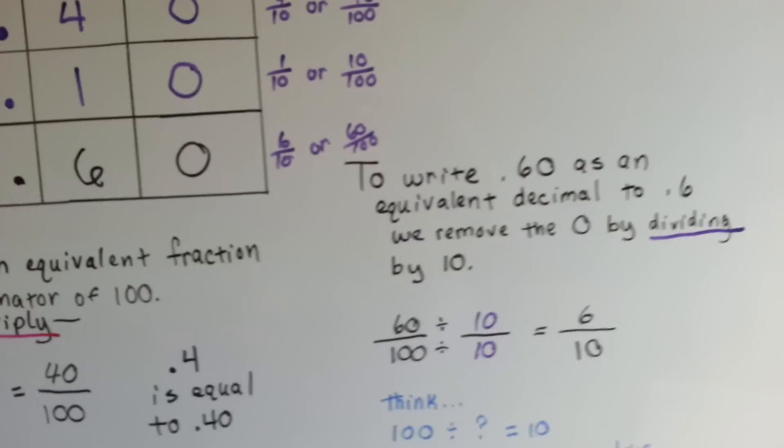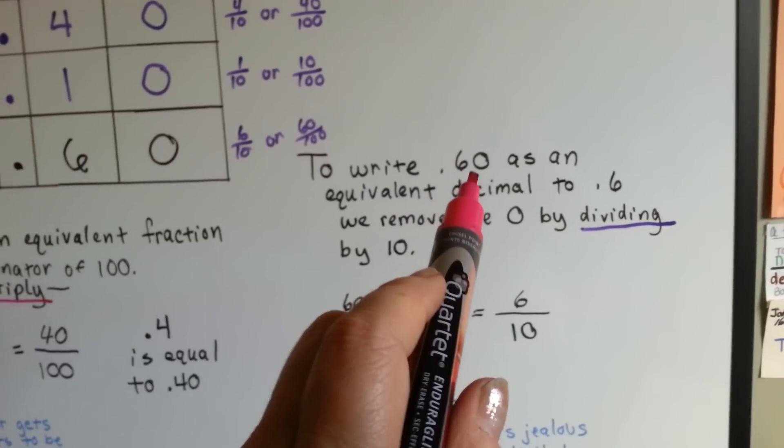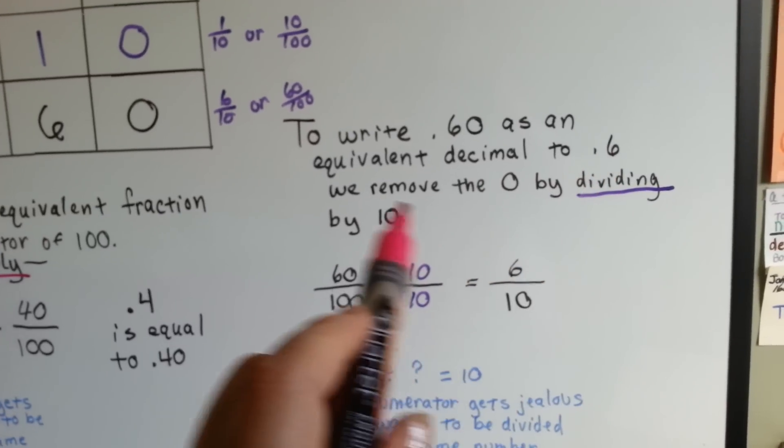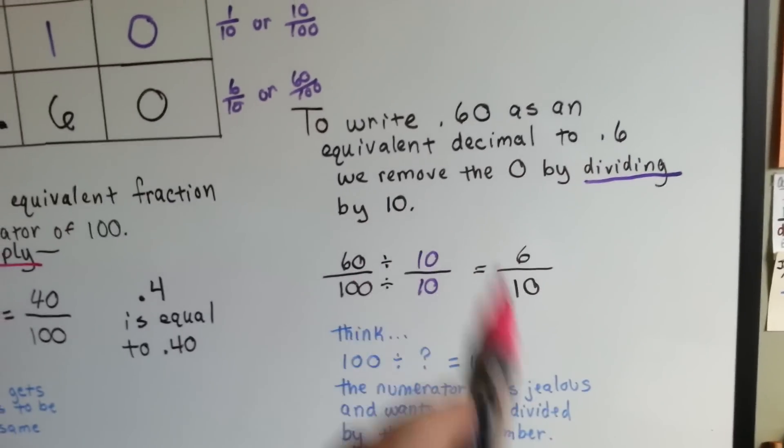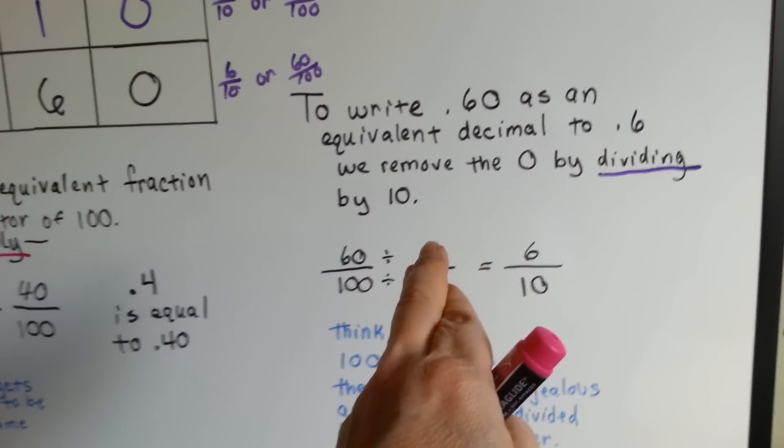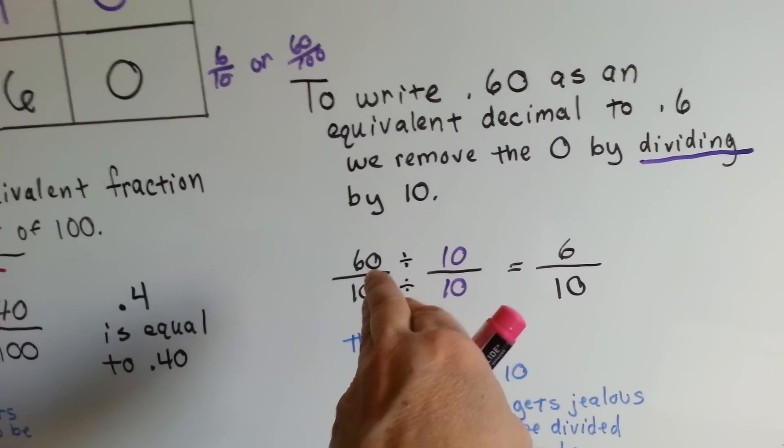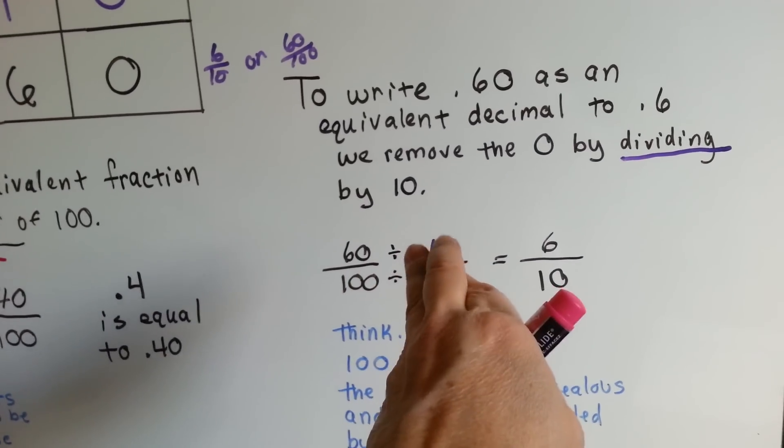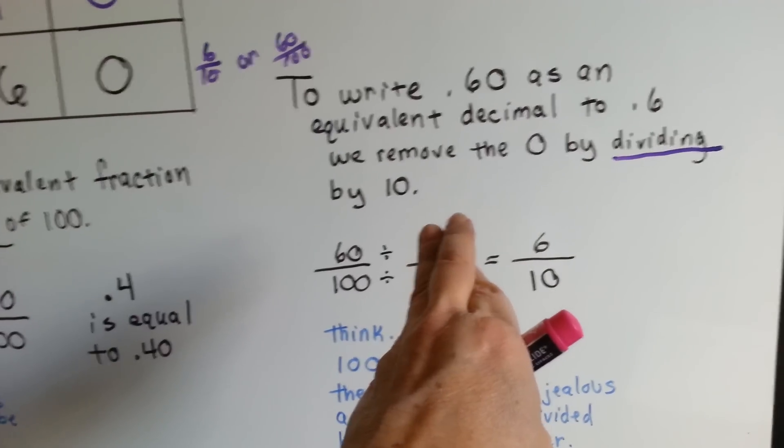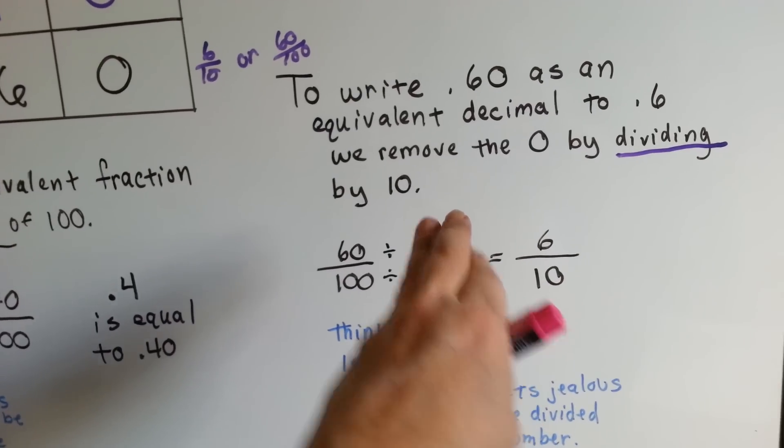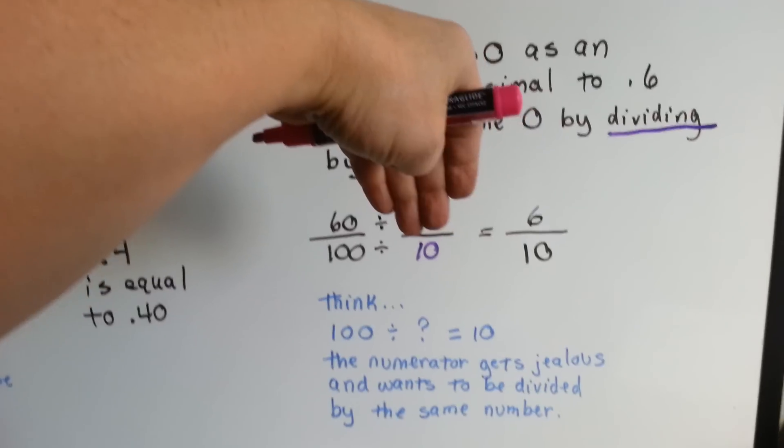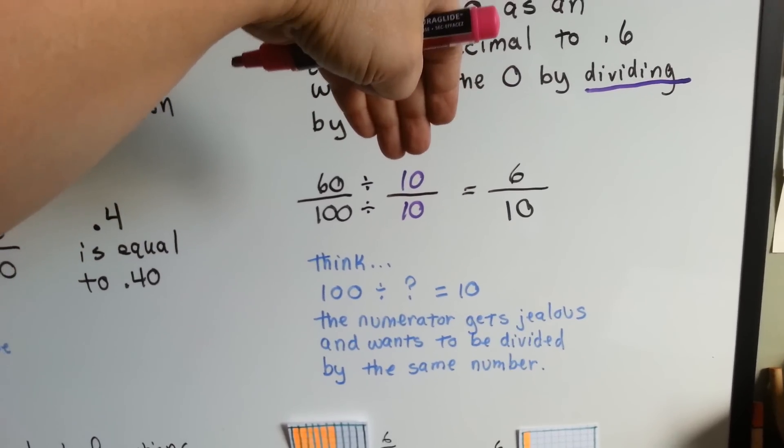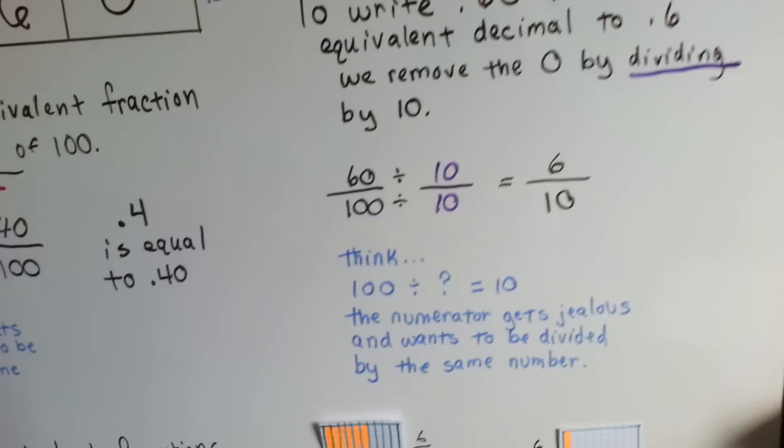So now, look at this. To write sixty one hundredths as an equivalent decimal to six tenths, we remove the zero by dividing by ten. If we didn't know that was there, and we said we want this hundredths denominator to be tenths, one hundred should be divided by what to become ten? It should be divided by ten. And the numerator is jealous. It wants to be divided by the same number, so we do. And sixty becomes six.